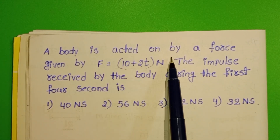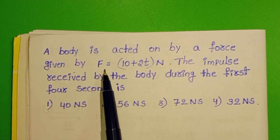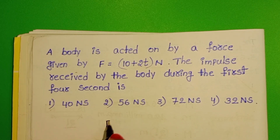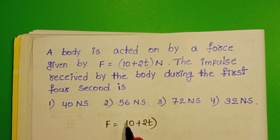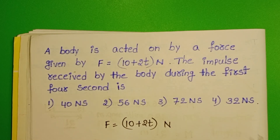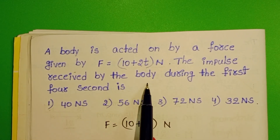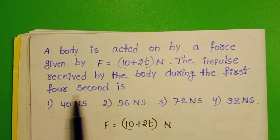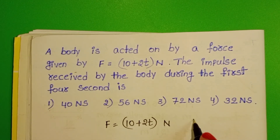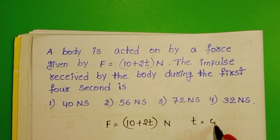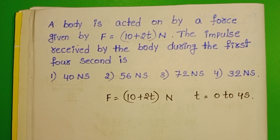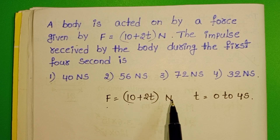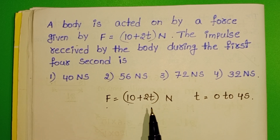A body is acted on by a force given by F equals 10 plus 2T newtons. The impulse received by the body during the first 4 seconds is to be found. In the given question, force is a function of time, and we have to find out the impulse received by the body.